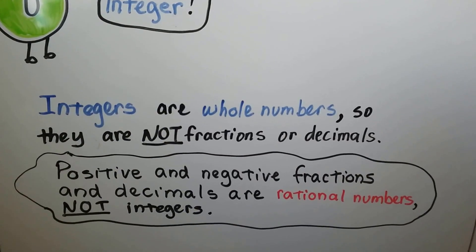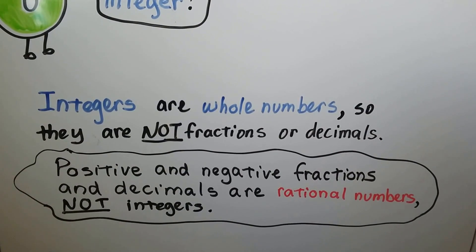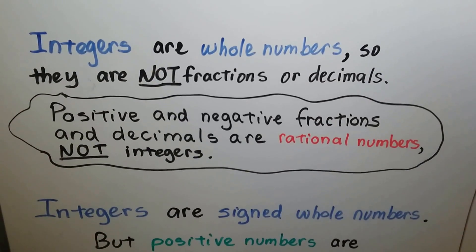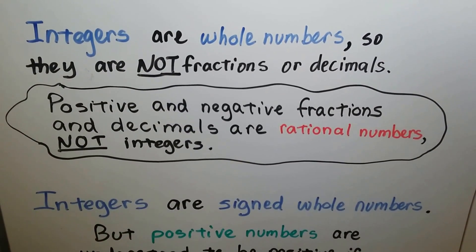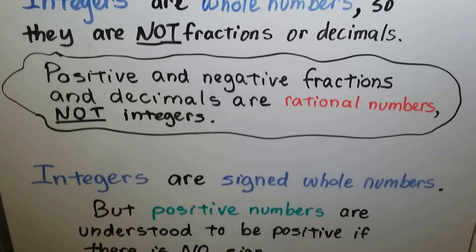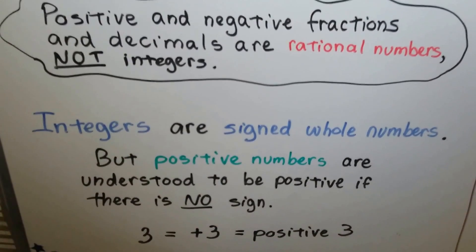They are whole numbers so they're not fractions or decimals. They're positive and negative whole numbers. Positive and negative fractions and decimals are called rational numbers. We're going to get into those in the future. Right now we're just dealing with the whole numbers, the integers, and they're signed whole numbers.